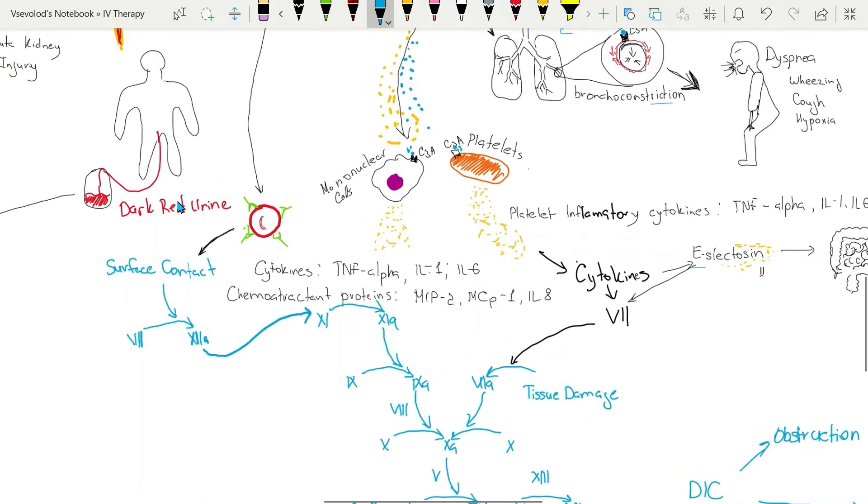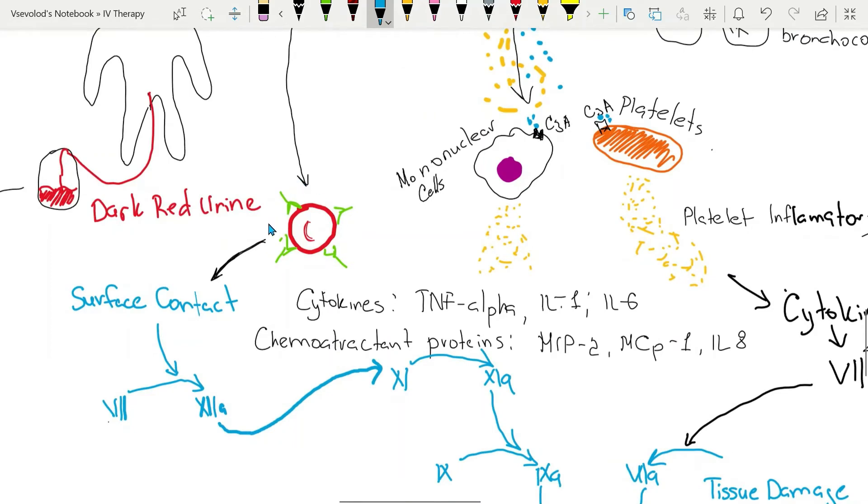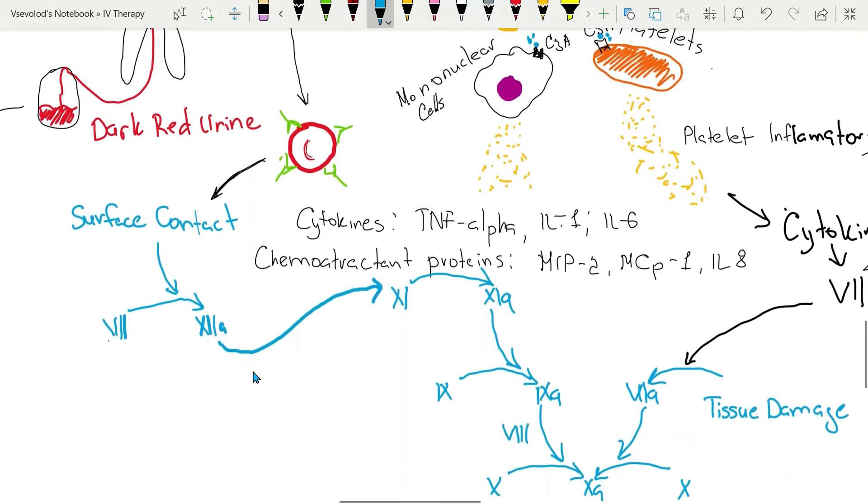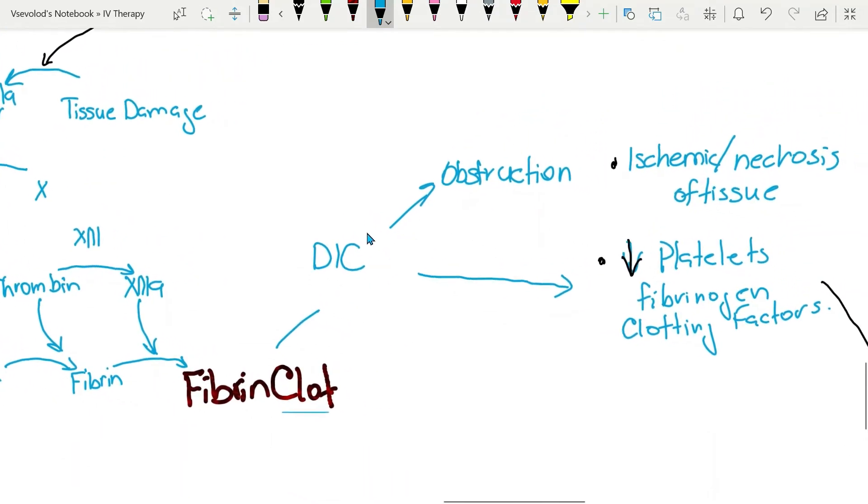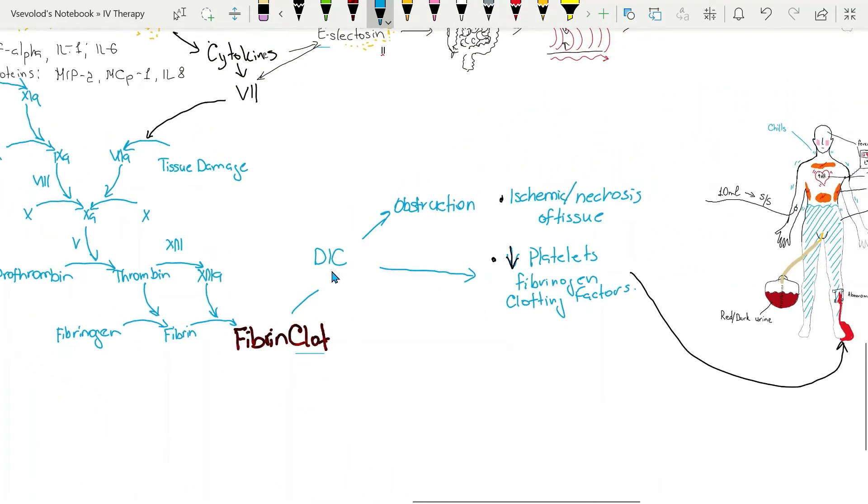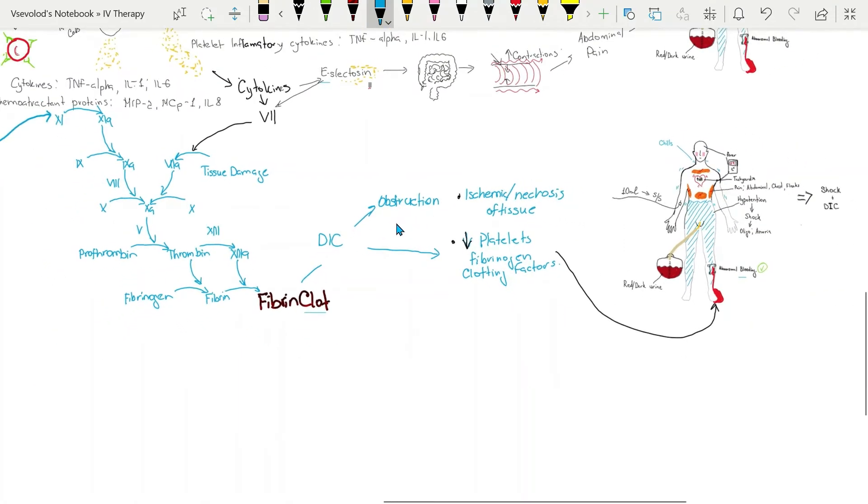Antigen antibody complex of the red blood cell will directly activate factor 12 in clotting cascade. Fibrin clots will form. It might possibly lead to disseminated intravascular coagulation. Small clots will cause obstruction of small blood vessels. Ischemia to the tissues will occur, leading to necrosis. Disseminated intravascular coagulation will activate more platelets. This is why there will be more bleeding at the injured sites.